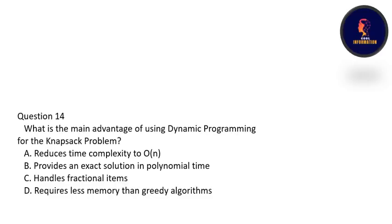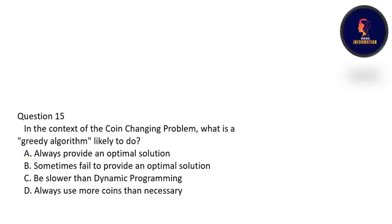What is the main advantage of using DP for the knapsack problem? The advantage is that it provides an exact solution in polynomial time — option B is correct. In the context of the coin changing problem, what is the greedy algorithm likely to do? The greedy algorithm sometimes fails to provide an optimal solution. Option B is correct.